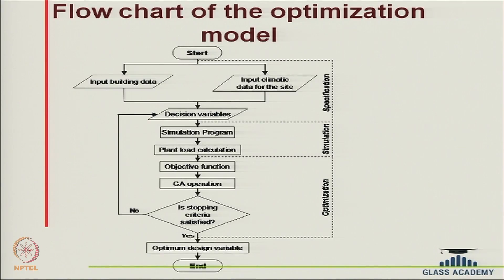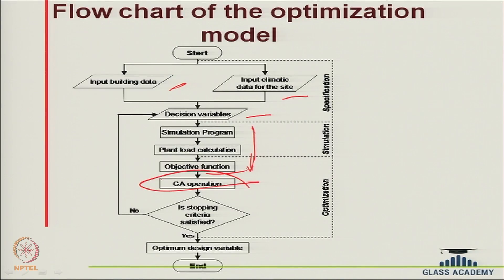This shows a flow chart of a typical optimization problem. You will have input data — building data, climatic data for the location — then your decision variables, then some sort of simulation program for plant load calculation, and you want to minimize that plant load calculation as an objective function. An optimization tool such as a genetic algorithm can be used, and some simulation software today does provide an optimization interface.